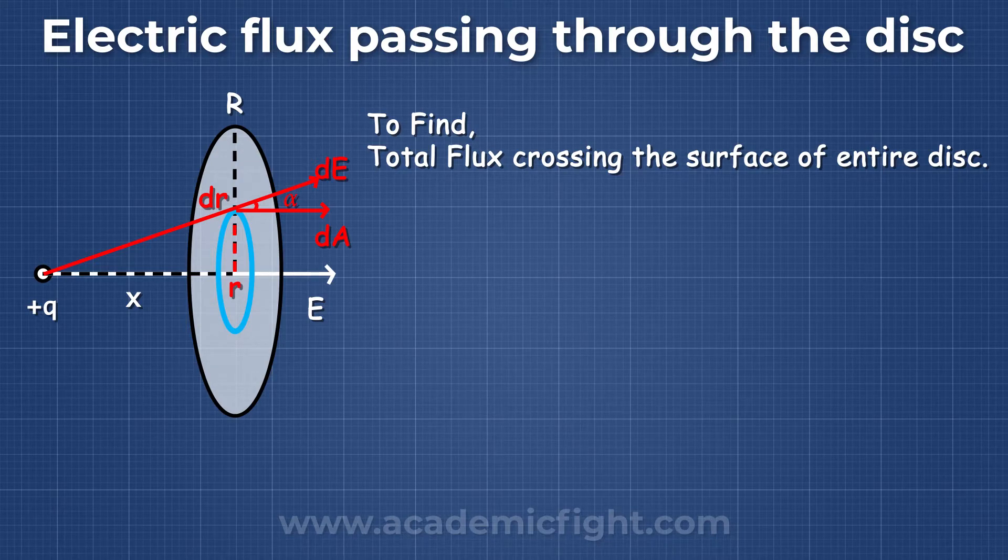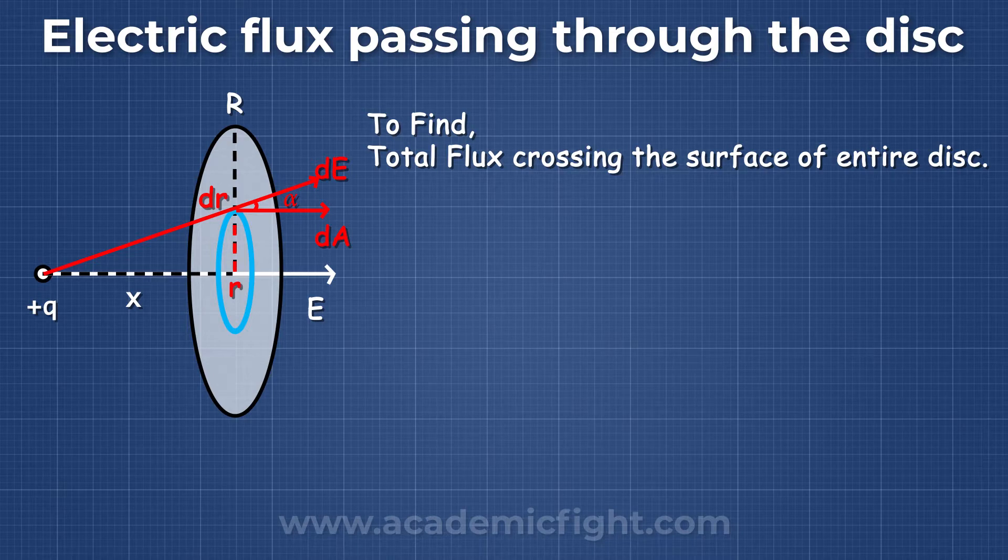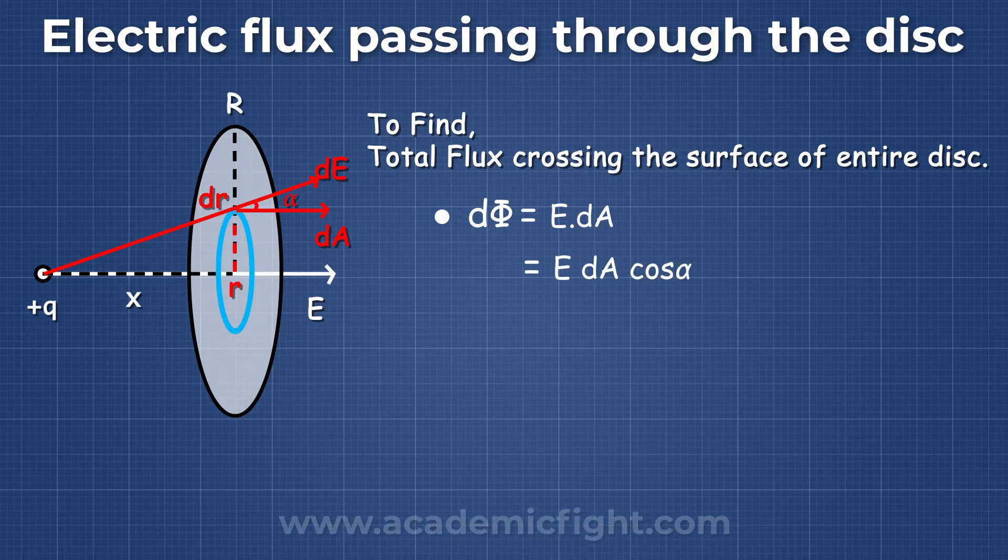Now for this ring, we have electric flux dφ equal to E·dA, equal to E into dA into cos alpha.